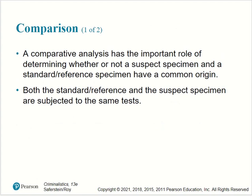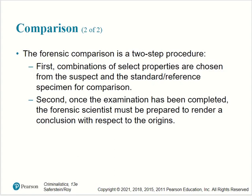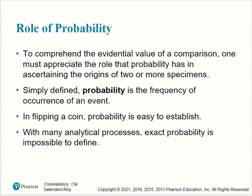Comparison: a comparative analysis has the important role of determining whether or not a suspect specimen and a standard reference specimen have a common origin. Both are subjected to the same tests. The forensic comparison is a two-step procedure: first, combinations of selected properties are chosen from the suspect and standard reference specimen for comparison; second, once the examination is completed, the forensic scientist must render a conclusion with respect to the origins.